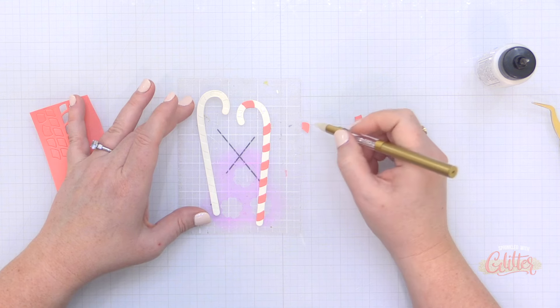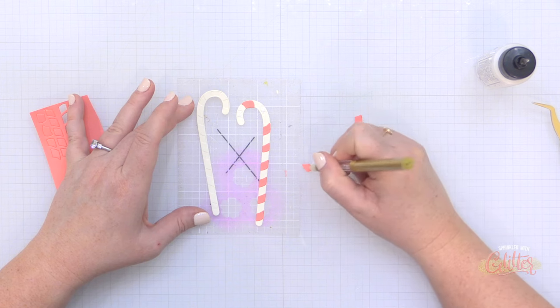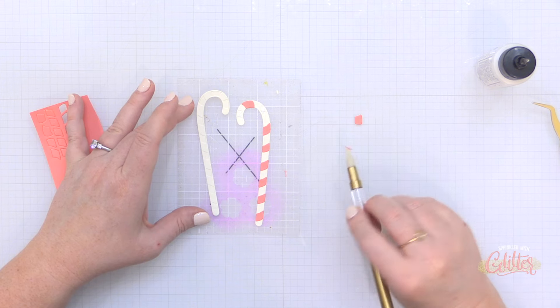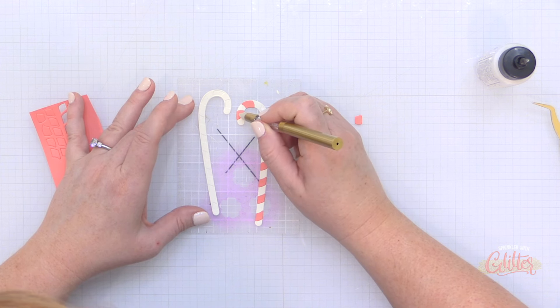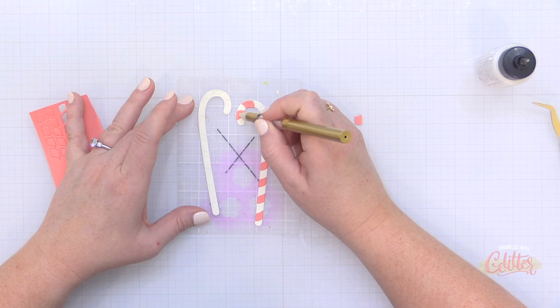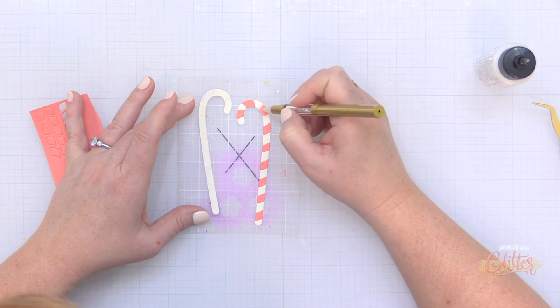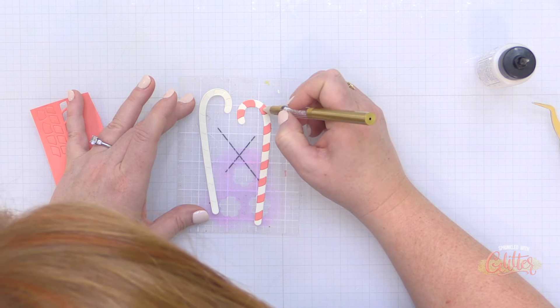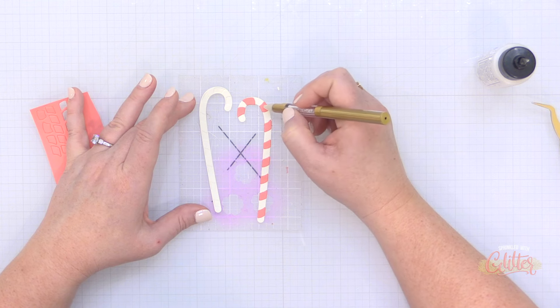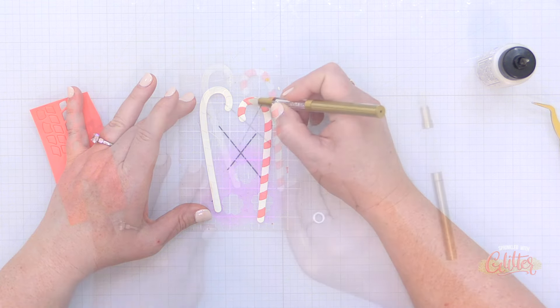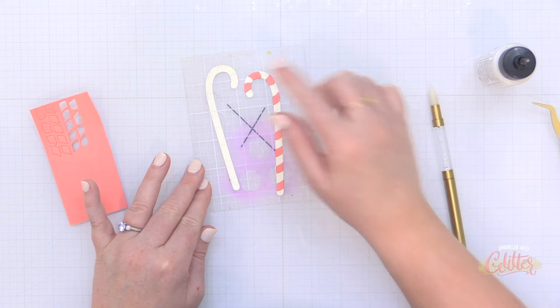And then there is a stripe die for each of the candy canes directions so you get two of the dies that create the stripes, one for each direction and two candy cane dies as well. Now to hold my candy canes in place as I place the stripes I am using a Misty sticky mat here. I have one that I use that I don't care if I get adhesive on, this is that one that I just keep to the side and if I'm doing something really messy I'll use this one. And I like to protect my photopolymer sticky mats so that I'm not getting liquid glue all over them.